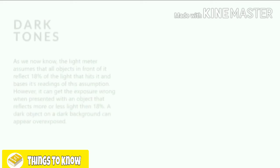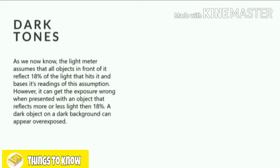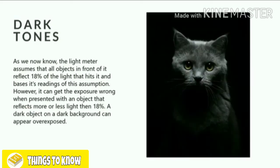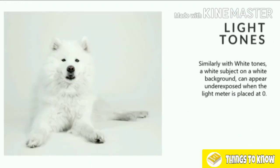There are particular cases where the light meter is going to get it wrong and where we'll need to use exposure compensation. That's when dealing with objects that have extreme dark or bright tones. The light meter works on the assumption that objects reflect 18% of the light that hits them. However, it can get this wrong when presented with an object that reflects more or less than 18%. For example, a dark object on a dark background can appear overexposed with the light meter at zero. Similarly, a white subject on a white background can appear underexposed when the light meter is placed at zero.